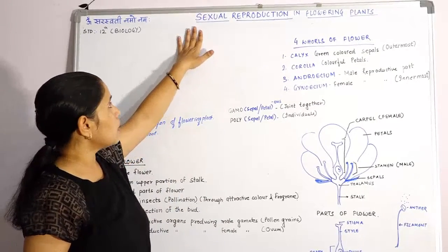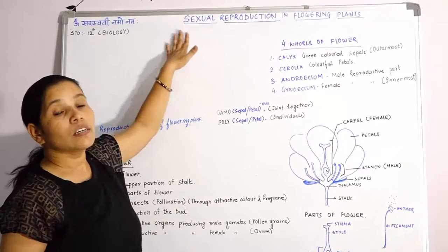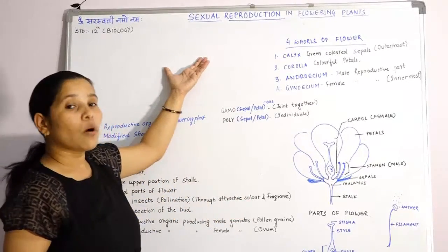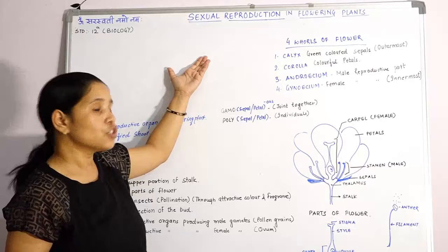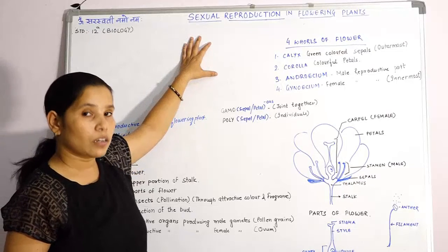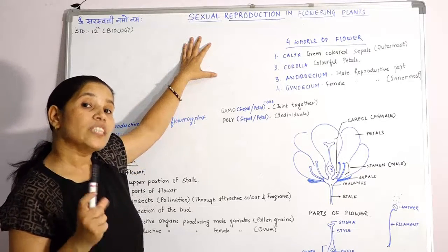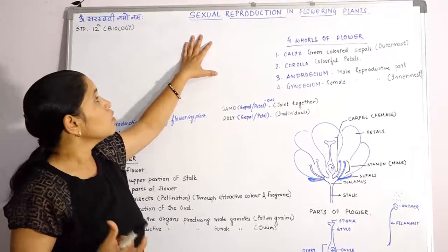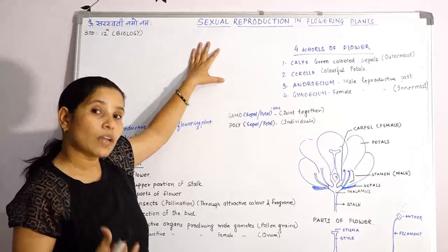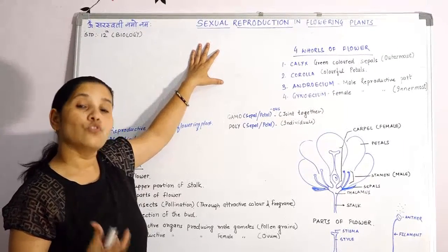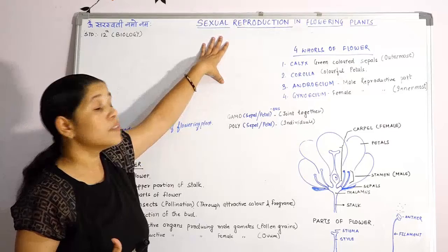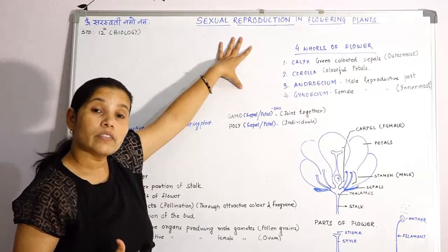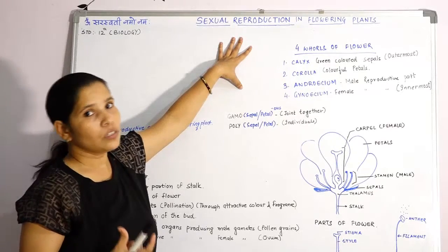Sexual reproduction is an advanced version of reproduction. It is a quite complicated kind of reproduction in which two gametes are required — two sex cells are required. In this, the male and female gametes fuse together to form a zygote. This is the way known as sexual reproduction.